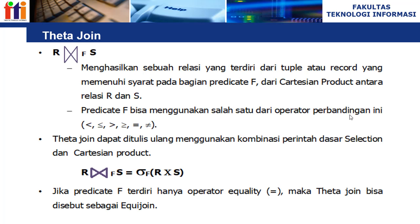Yang pertama kita bahas adalah theta join. Theta join R⋈FS menghasilkan sebuah relasi yang terdiri dari tuple atau record yang memenuhi syarat pada predicate F dari Cartesian product antara relasi R dan S. Predicate F bisa menggunakan operator perbandingan: lebih besar, lebih besar sama dengan, lebih kecil, lebih kecil sama dengan, sama dengan, atau tidak sama dengan. Data juga dapat ditulis ulang menggunakan kombinasi selection dan Cartesian product. Jika predicate F hanya menggunakan operator equality (sama dengan), maka theta join disebut equi join.